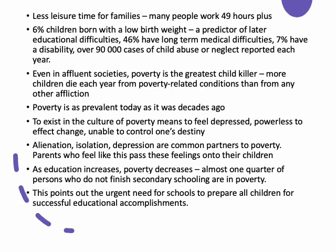We have over 90,000 cases of child abuse or neglect reported each year. Even in affluent societies like Australia, poverty is the greatest child killer — more children die from poverty-related conditions than any other affliction. Poverty is as prevalent today as it was decades ago; proportions haven't changed. People in poverty feel depressed, powerless, and unable to control their destiny, manifesting as isolation and depression, and parents often pass those feelings onto their children.